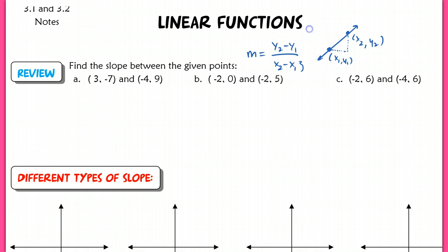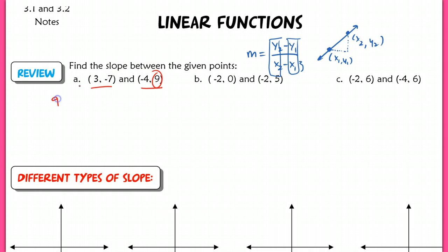What's important here is to make sure that it doesn't matter which point you pick first, but make sure that you have y2 stacked up on top of x2, and y1 stacked up on top of x1. So if I were to do this very first problem, if I pick 9 and subtract negative 7 from it, I must pick negative 4 on the bottom and subtract away 3. This is going to assure that I have the correct slope.